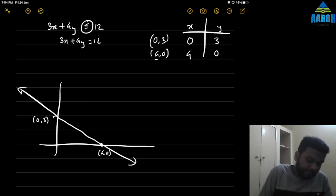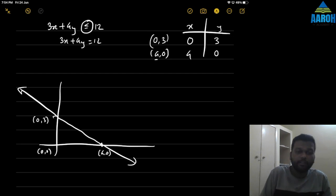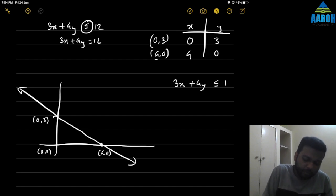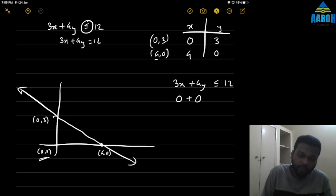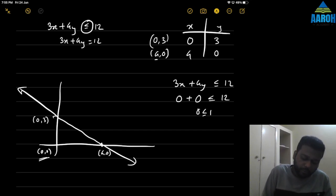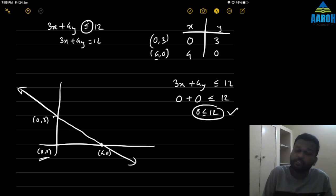Let's understand carefully how we can check. Take one point below the line — for example 0 comma 0. Put it into the inequality 3x plus 4y less than or equal to 12. With x and y both 0, we get 0 is less than or equal to 12. That is correct, so the area is towards this point — towards the origin.